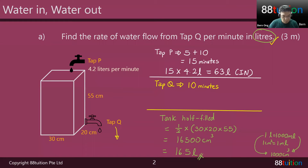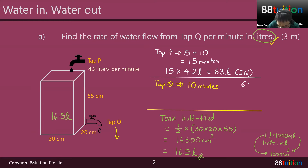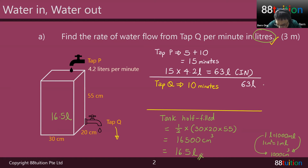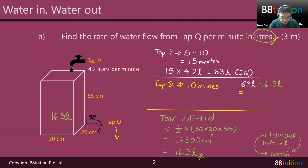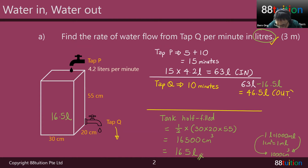So 16.5 liters of water is inside the tank after all this. We know that water goes in 63 liters, but we don't know how much water is coming out. But we know that at the end of the day, there's 16.5 liters left inside. So if I take the 63 in minus 16.5 liters, I get 46.5 liters. This 46.5 liters represents the water going out — that's what tap Q drained. I have 63 liters of water, 46.5 liters is flowing out, that's why I got 16.5 liters remaining.